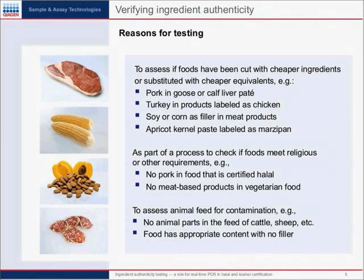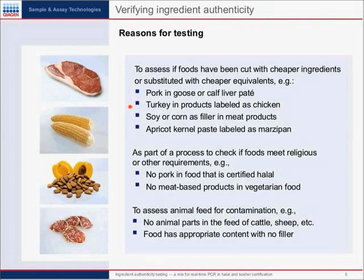So verifying ingredient authenticity — why would people be interested in testing for it? First of all, we'd like to see perhaps if foods have been cut with cheaper ingredients or substituted with cheaper equivalents. As food becomes more globalized, sometimes manufacturers will cut the food with cheaper ingredients to get better return on investment or a cheaper process. For instance, pork can be used in place of goose or calf liver in pâté. Turkey can be used in products labeled as chicken because turkey is much cheaper. Soy or corn could be used as a filler in meat products like sausage to decrease the amount of meat needed.